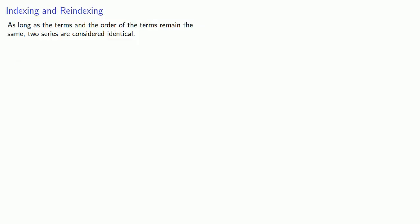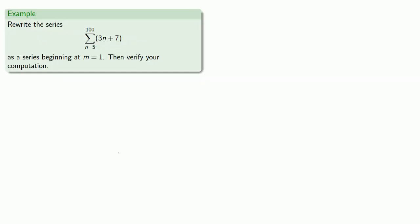Series are a little bit trickier than sequences, but as long as the terms and the order of the terms remain the same, two series are considered identical. What this means, however, is that the indices might not look alike, even though they do give you the same terms in the same order. Because of this, it's sometimes useful to re-index a series.